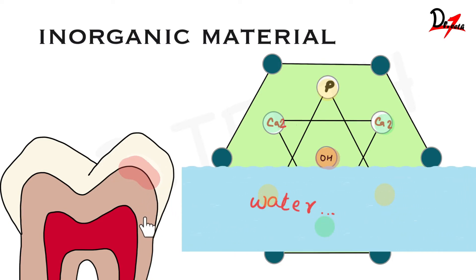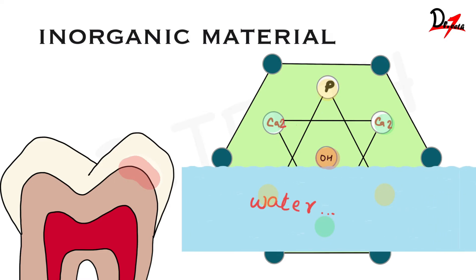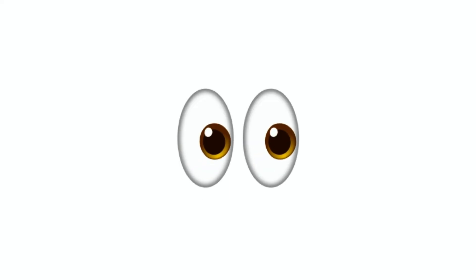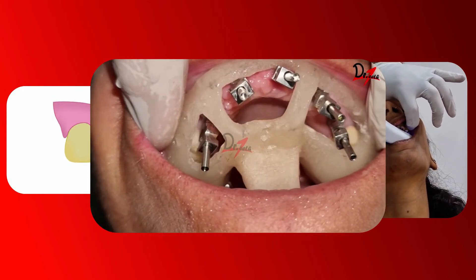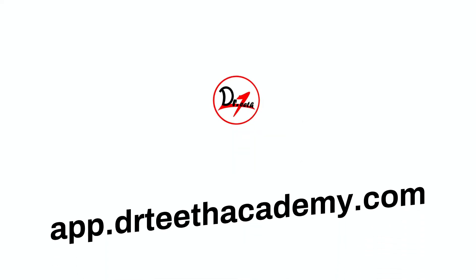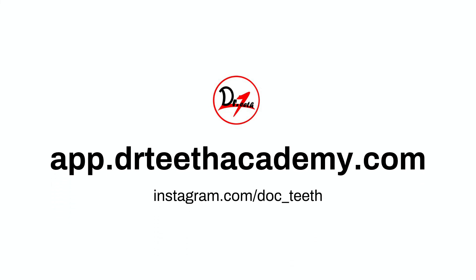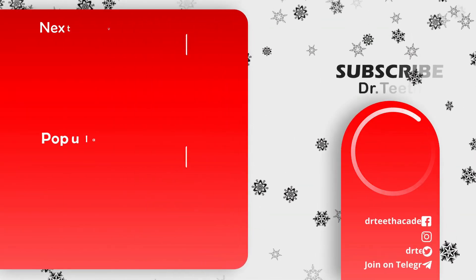In the next video we'll be studying about the structure of enamel, covering very important topics like Hunter-Schreger bands, striae of Retzius, neonatal line, tufts, lamellae, and much more. Do leave a thumbs up and comment below if you have any doubts — I will make sure to cover it in the next video. Take care!